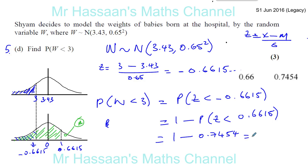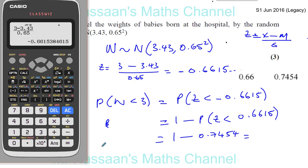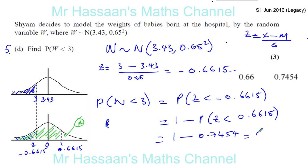Calculating 1 minus 0.7454 gives the answer: 0.2546. So the probability that a baby weighs less than 3 kilograms under this model is 0.2546.